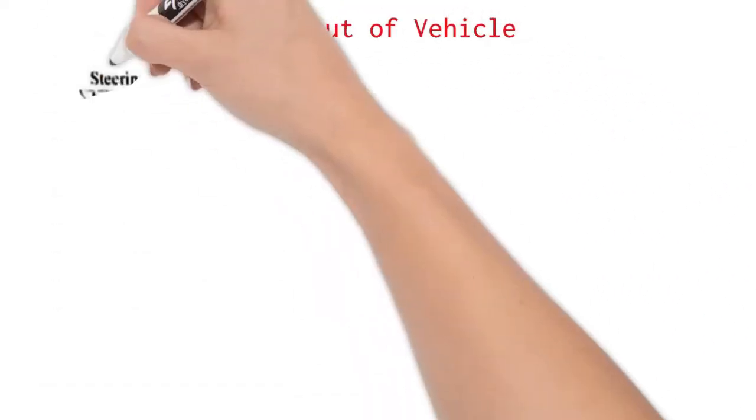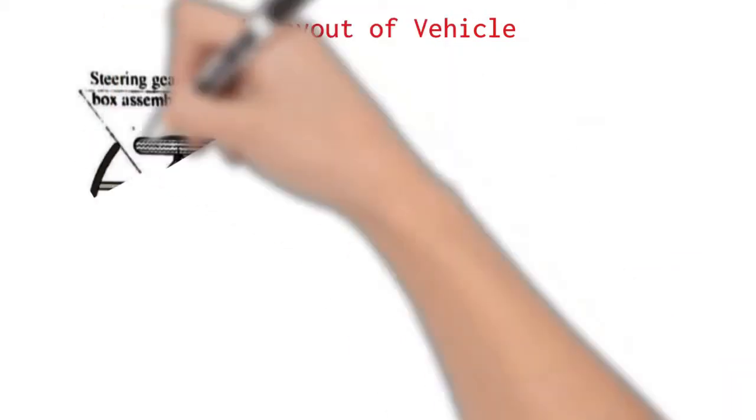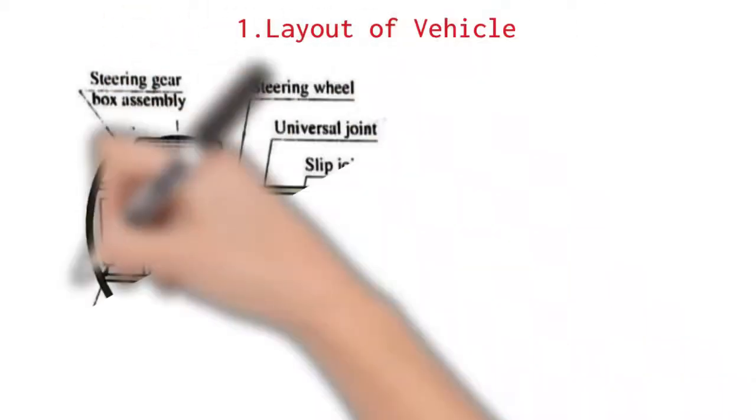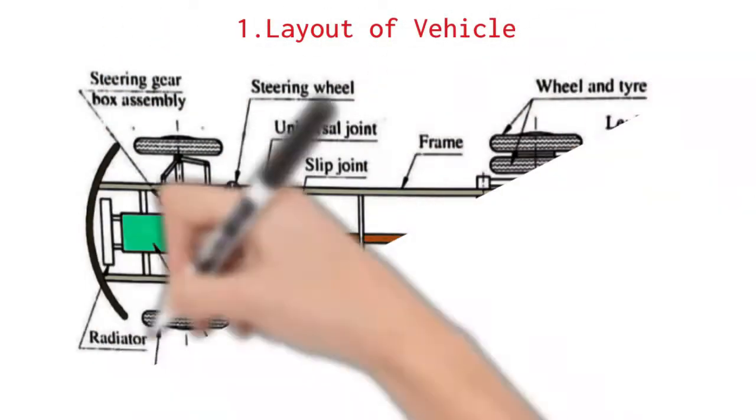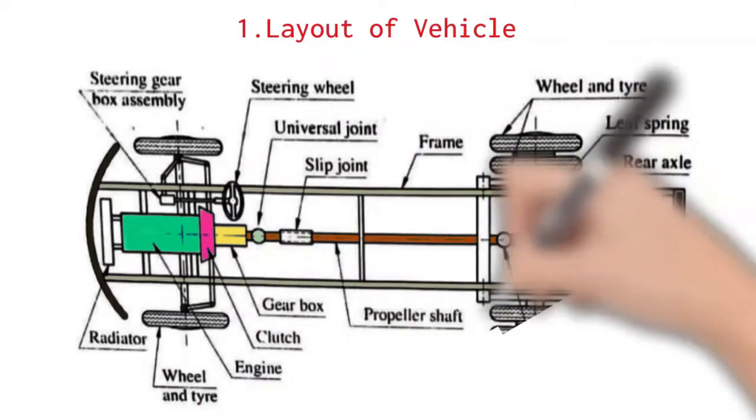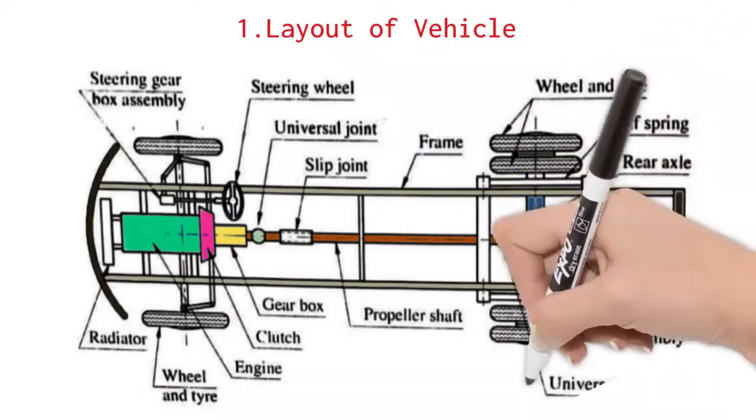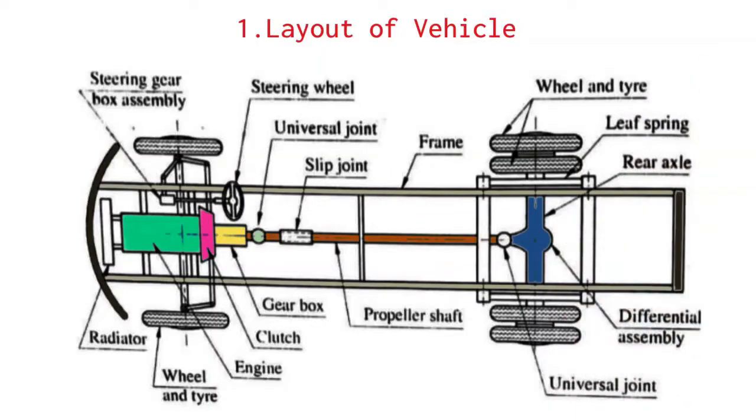Layout of a vehicle. Figure shows the complete layout of a vehicle with all main aggregates. The layout consists of engine located at the front of the vehicle, followed by clutch, gearbox, propeller shaft, universal joint, front and rear axles.